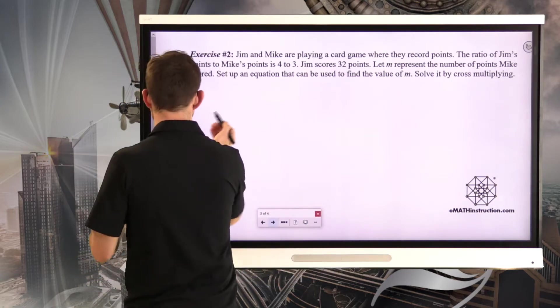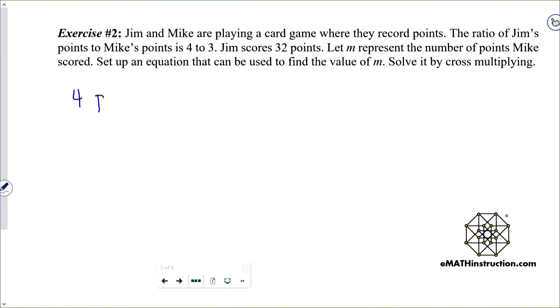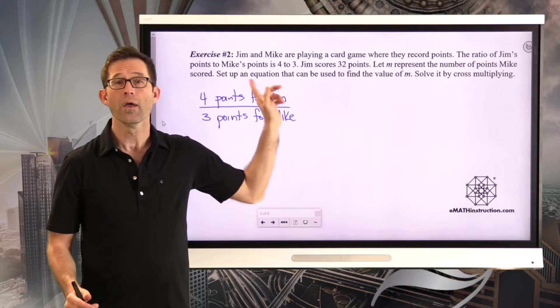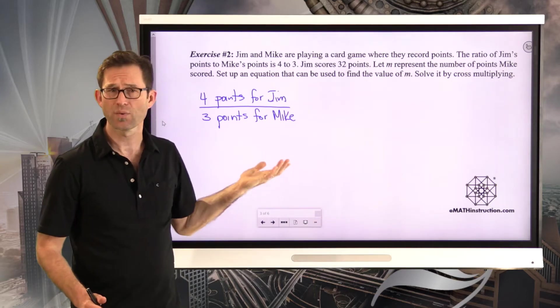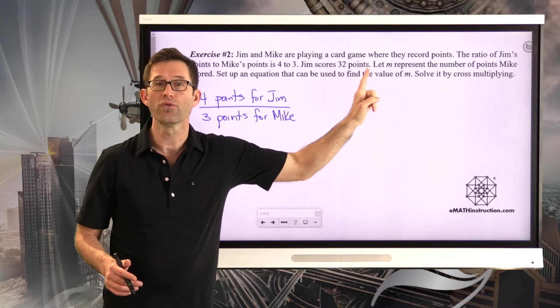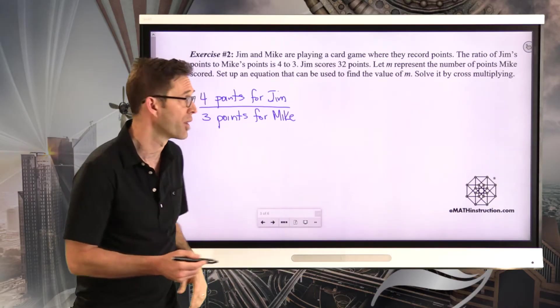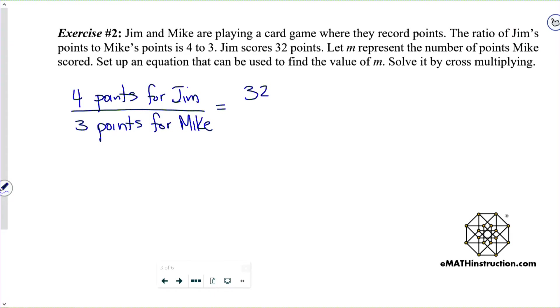Let M represent the number of points Mike scored. Set up an equation that can be used to find the value of M. Solve it by cross-multiplying. What we know is the ratio of Jim's points to Mike's points is 4 to 3. So maybe I'll start by just setting that up. 4 points for Jim to 3 points for Mike. That's our fundamental ratio. By the way, we could set that ratio up in either order.